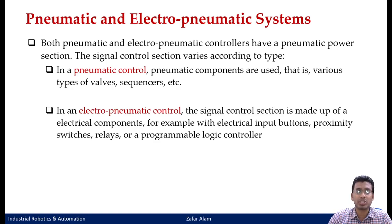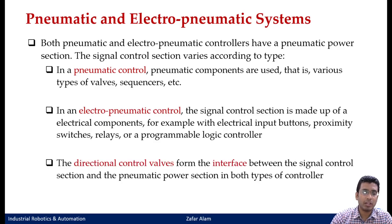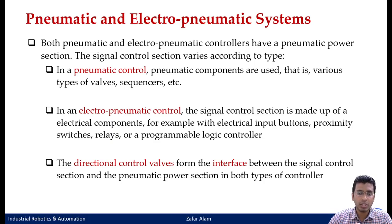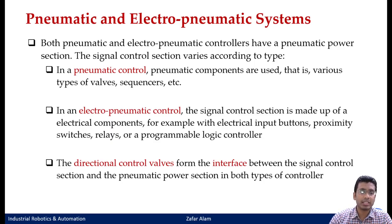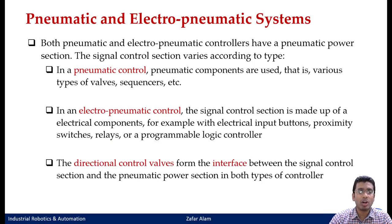In electro-pneumatic control, all signals will be electrical, and they are finally processed either using relays or PLCs, which we will study in the next module. The signal output will again be a 5/2 valve, but it will be a solenoid operated valve instead of a double pilot operated valve. Your direction control valves form an interface between the signal control section and the power section.